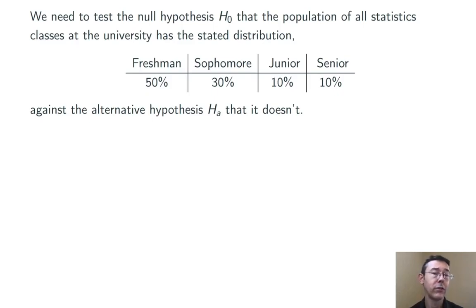50% freshmen, 30% sophomores, and so on. And the alternative hypothesis is just going to be that the distribution is different.